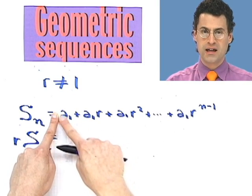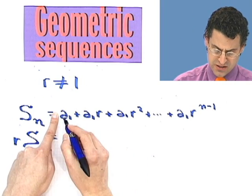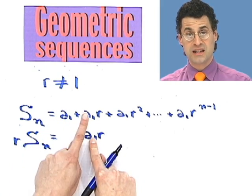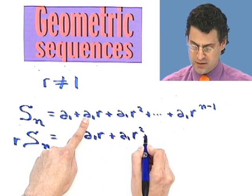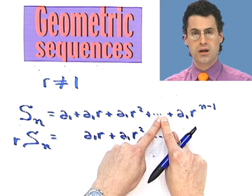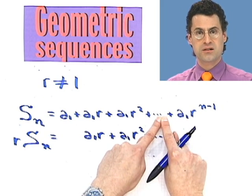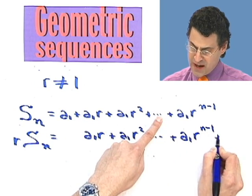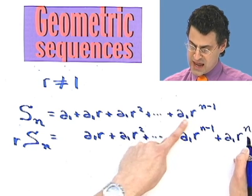When I take the first term a1 and multiply it by r, it becomes a1r. Then a1r times r becomes a1r squared, and I keep doing that. I get to the penultimate term, a1r to the n minus 2. When I multiply that by r, I get a1r to the n minus 1. And then the last term, multiplied by r, gives a1r to the n.